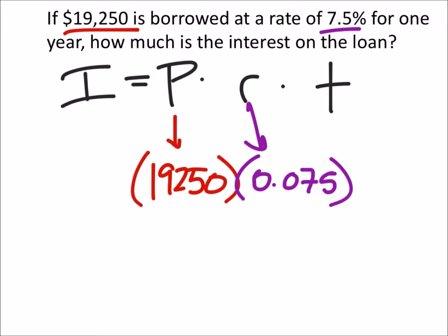Be careful because a lot of us tend to make that 7.5 as the rate, but we need to make that a decimal first. Sometimes we don't move the decimal enough times as well. The time on this one is for one year.